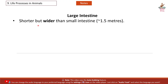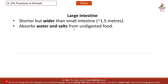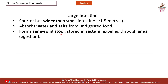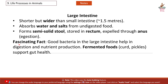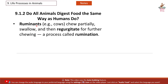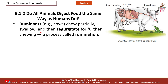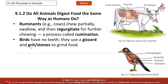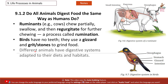The large intestine is shorter but wider than the small intestine, approximately 1.5 meters. It absorbs water and salts from undigested food, forming semi-solid stool stored in the rectum and expelled through defecation. Fascinating fact: good bacteria in the large intestine help in digestion and nutrient production. Fermented foods like curd and pickles support gut health. Ruminants, like cows, chew food partially, swallow it, then regurgitate it for further chewing — a process called rumination. Birds have no teeth; they use a gizzard and grit to grind food. Different animals have digestive systems adapted to their diets and habitats.